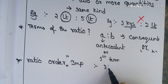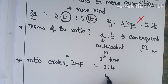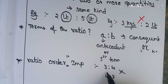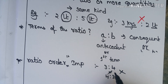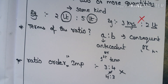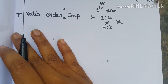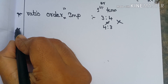Suppose 3 is to 4 — that ratio is not the same as 4 is to 3. The ratio 3 is to 4, and 4 is to 3 are not the same. So, this is the main important point about ratios.